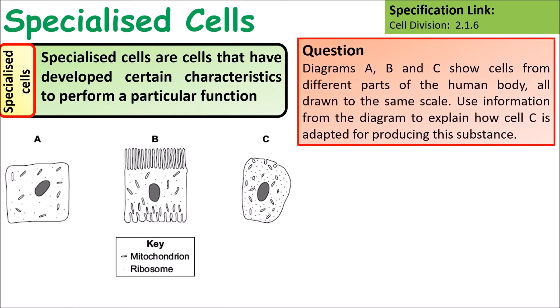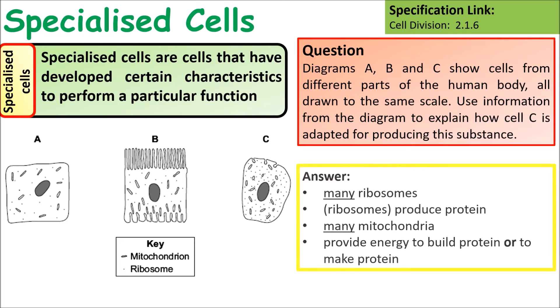Looking at another exam question: diagrams A, B, and C show cells from different parts of the human body, all drawn to the same scale. Explain how cell C is adapted for producing a substance. Key points to include: there are many ribosomes producing proteins, and many mitochondria to provide the energy required to make protein.